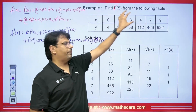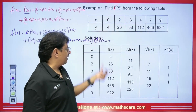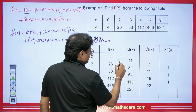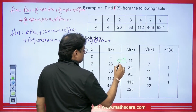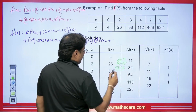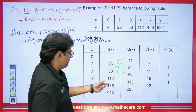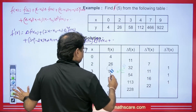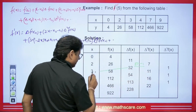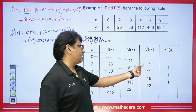So whenever we have this type of question, we will make a difference table with x values: 0, 2, 3, 4, 7, 9. Here we put the values of f(x). The first divided difference is computed as: (26 − 4) / (2 − 0) = 22/2 = 11. Then (58 − 26) / (3 − 2) = 32. The second divided difference is: (32 − 11) / (3 − 0) = 21/3 = 7. And (54 − 32) / (4 − 2) = 11.